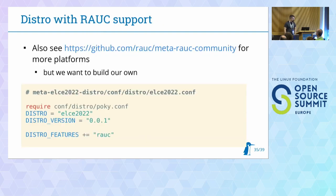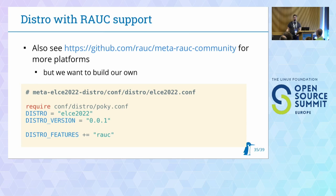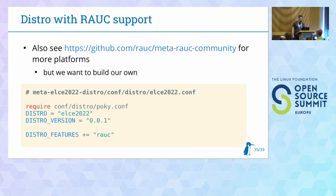We need Rauc support too. We are using meta-rauc, which already has recipes for Rauc itself and support for copying system.conf. There is also a meta-rauc community layer on our GitHub organization with support for other platforms. We create a new distro layer using the bitbake-layers tool with a minimal distro.conf — you set the distro name, distro version, and use rauc as the distro feature.